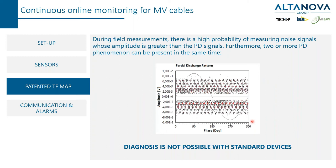When we perform a field measurement there is a high probability that we are also measuring noise, or more than one phenomenon at the same time. If we observe the measurement just from the phase-resolved partial discharge pattern, we see all the phenomena overlapped, making it almost impossible to perform an accurate analysis. We have to find a solution to solve this issue.